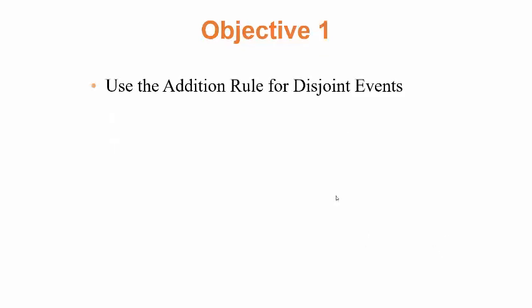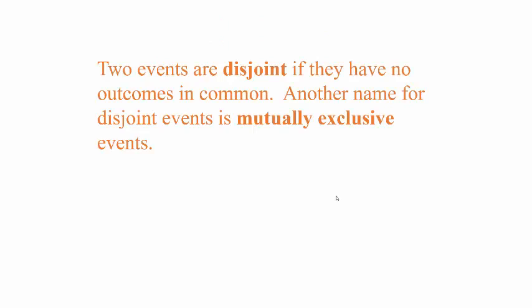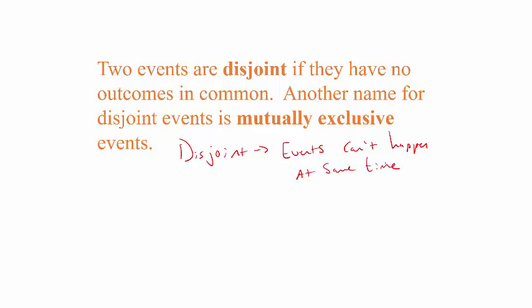Let's start with the addition rule for disjoint events. Two events are disjoint if they have no outcomes in common. Another name for disjoint is mutually exclusive. Another way to say disjoint is the events can't happen at the same time. For example, if you roll a six-sided die, event E is rolling an even number and event F is rolling an odd number — these are disjoint.